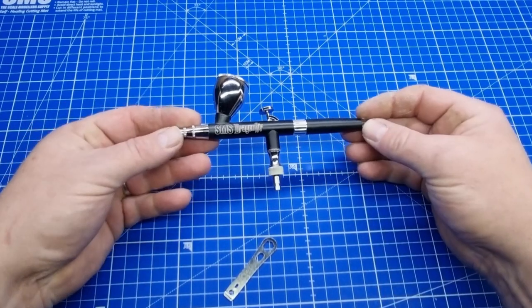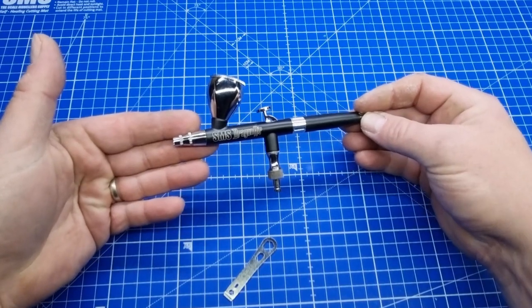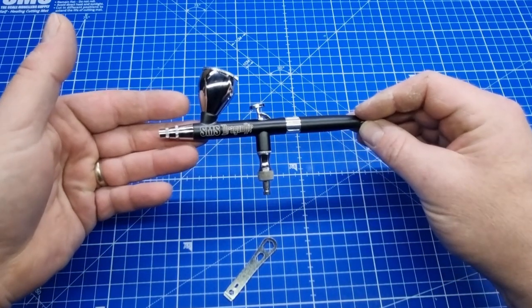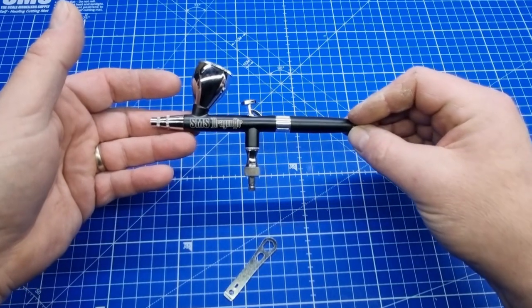This airbrush here is the 0.3 sized airbrush. You can tell by the color: the black is a 0.3 and the blue is a 0.2.